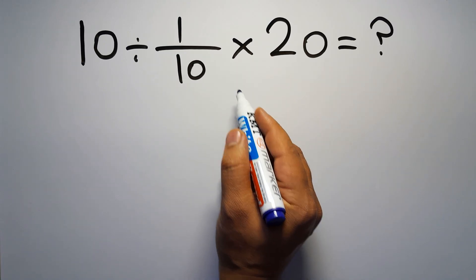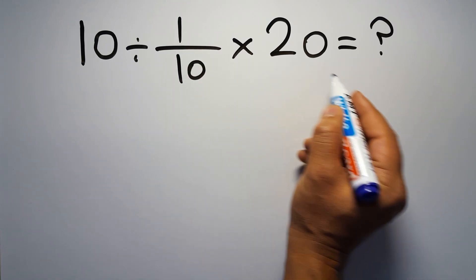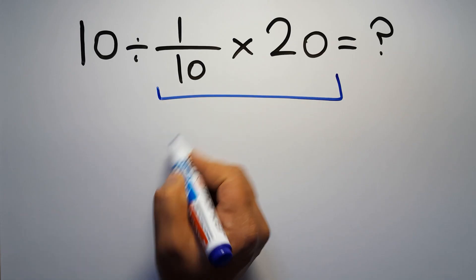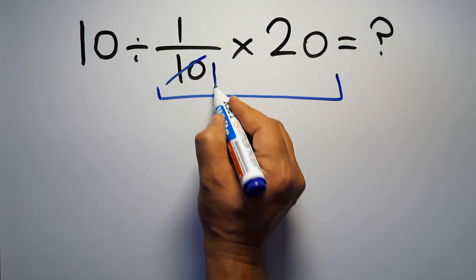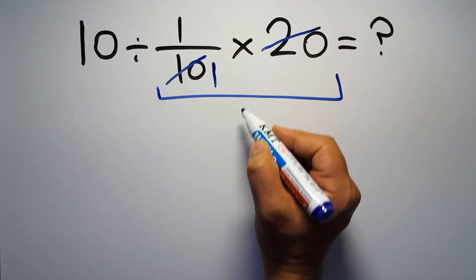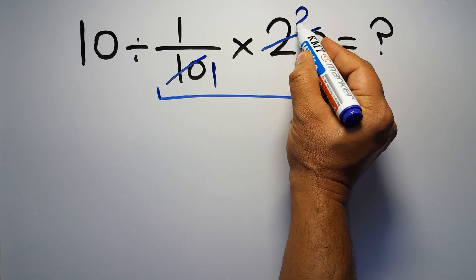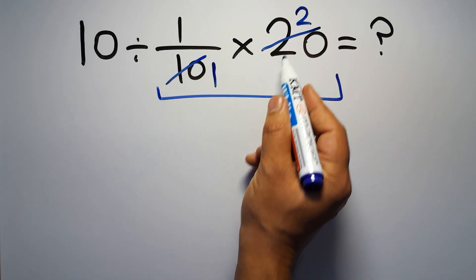First, we do this multiplication: 1 over 10 times 20. 10 divided by 10 gives us 1, and 20 divided by 10 equals 2. So here, we have just 2.